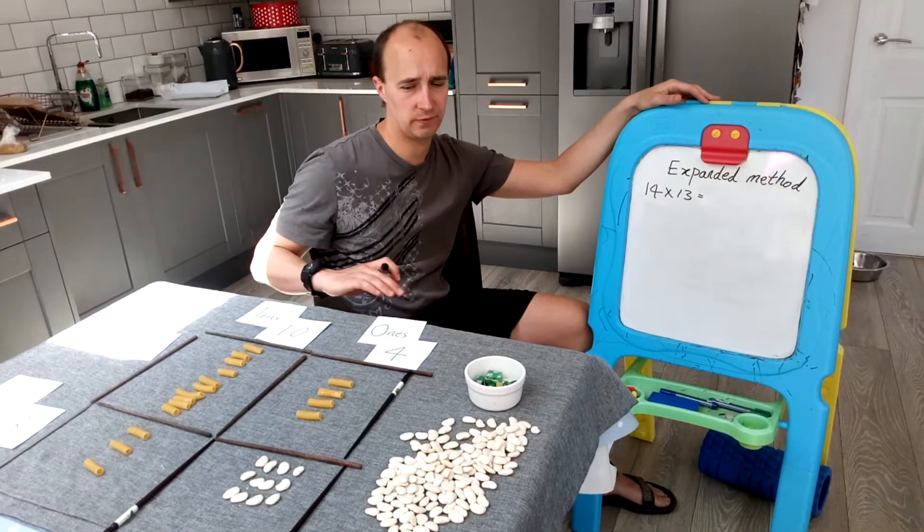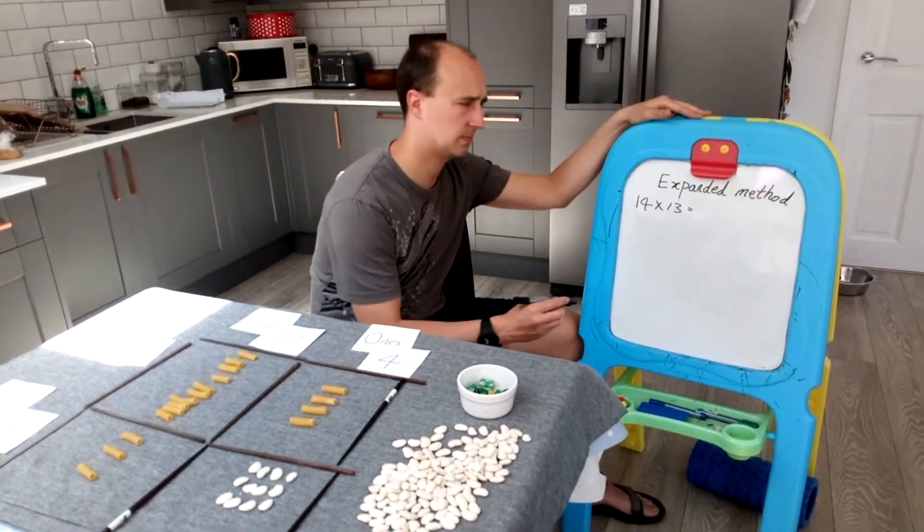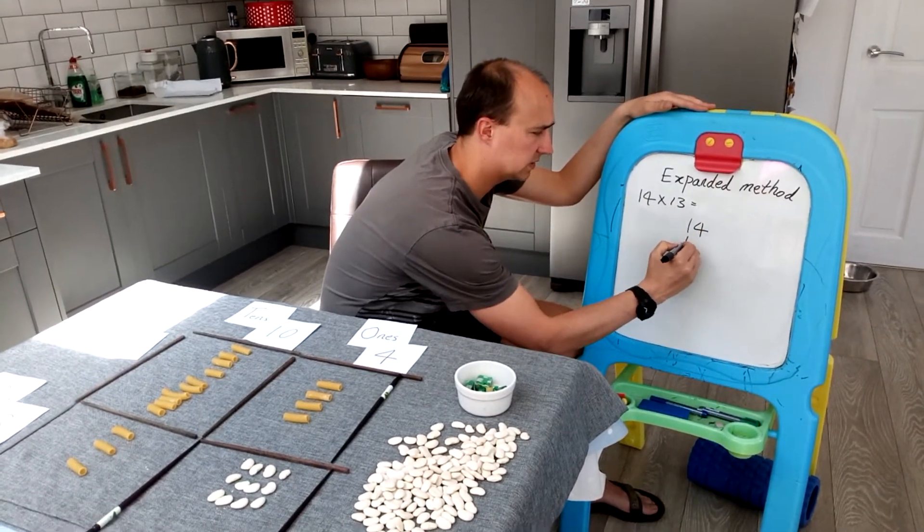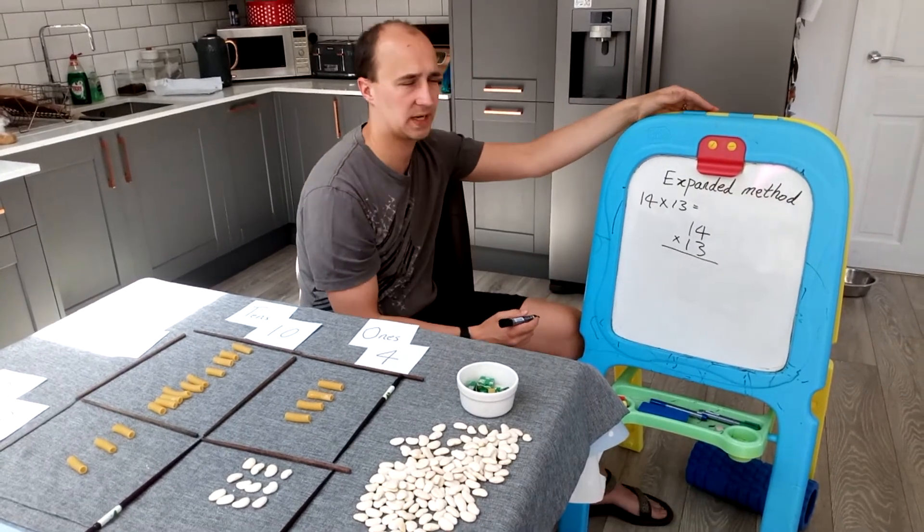We're going to look at the abstract form of that. So we've looked at the concrete method, now we're going to look at the abstract method. So it will look a little bit like this: 14 multiplied by 13, and it's starting to look more like long multiplication now.